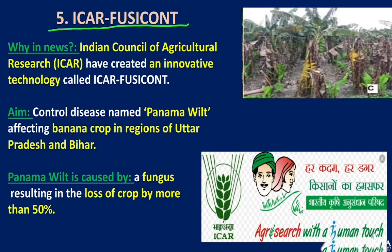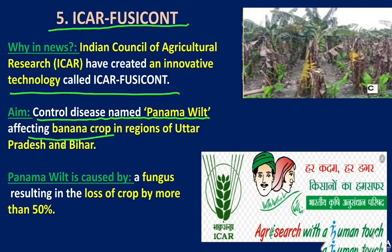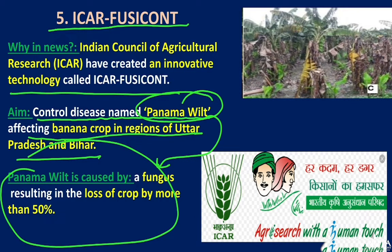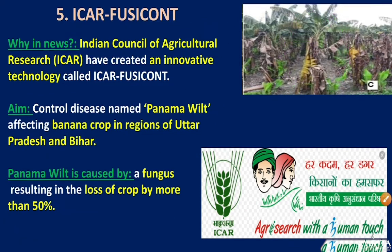ICAR Fusicont: the Indian Council of Agricultural Research has created an innovative technology called Fusicont, aimed at controlling Panama wilt — a disease affecting banana crops in Uttar Pradesh and Bihar. Panama wilt is caused by a fungus and results in crop losses of more than 50 percent.